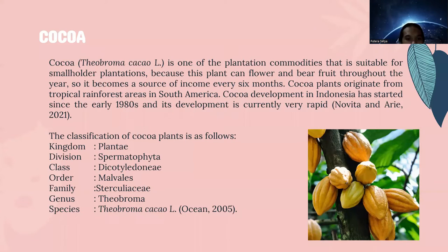Cocoa development in Indonesia started in the early 1980s and is currently growing very rapidly. The classification of cocoa is: kingdom Plantae, division Spermatophyta, class Dicotyledonae, order Malvales, family Sterculiaceae, genus Theobroma, and species Theobroma cacao L.